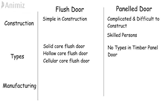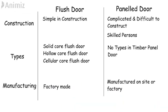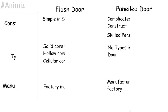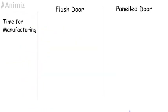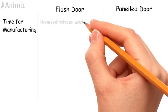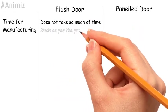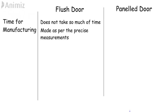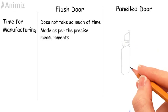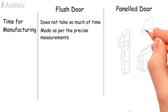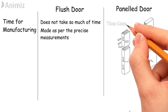Manufacturing: Flush doors are factory made, whereas panel doors can be manufactured on site as well as in the factory. Time for manufacturing: The manufacturing of a flush door does not take much time — the only thing to be taken care of is that they are made as per precise measurements. Whereas manufacturing of a panel door demands a lot of detailing and precision, which is time-consuming.